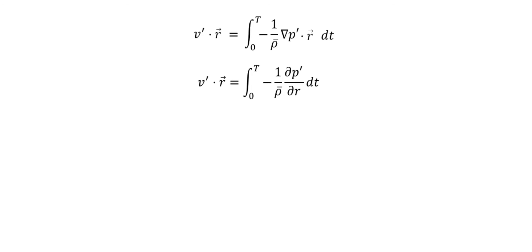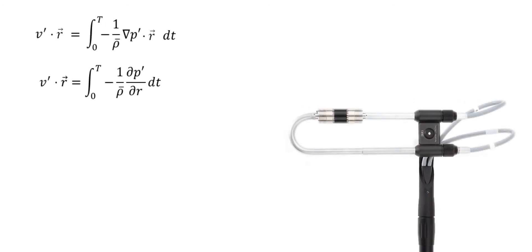So that's really what the intensity probe is doing. By having two tightly matched microphones, we can measure the pressure at two distinct locations, which enables us to get an approximation for delta p. And since we know the spacing between the mics, we know delta r.